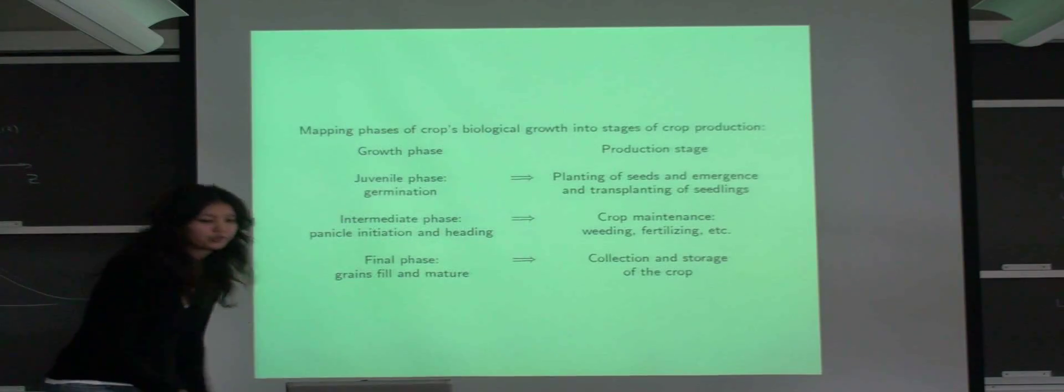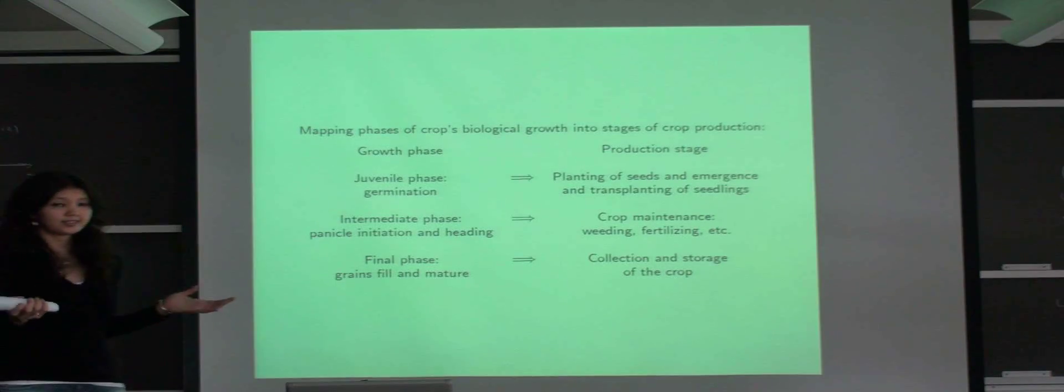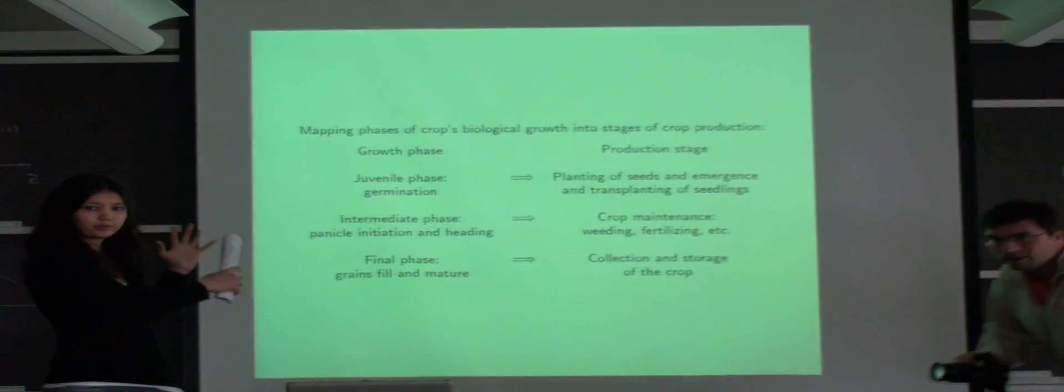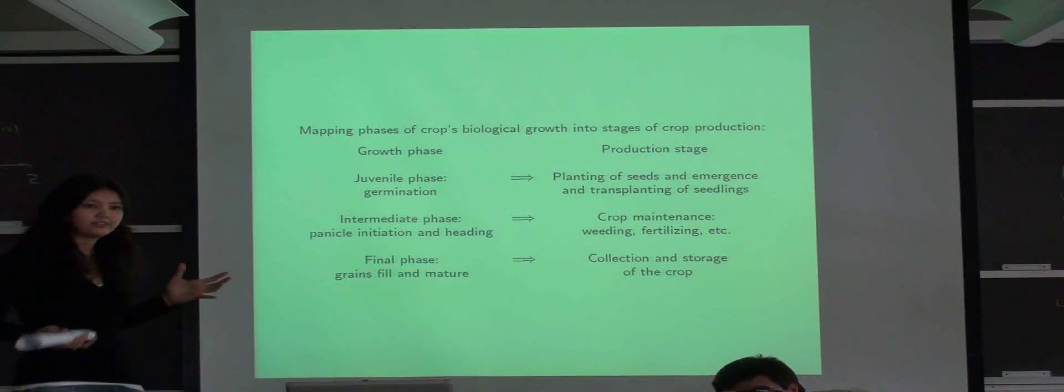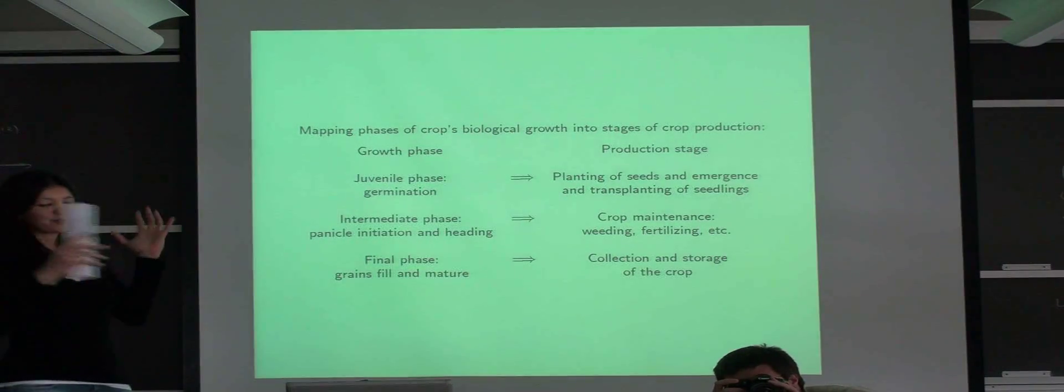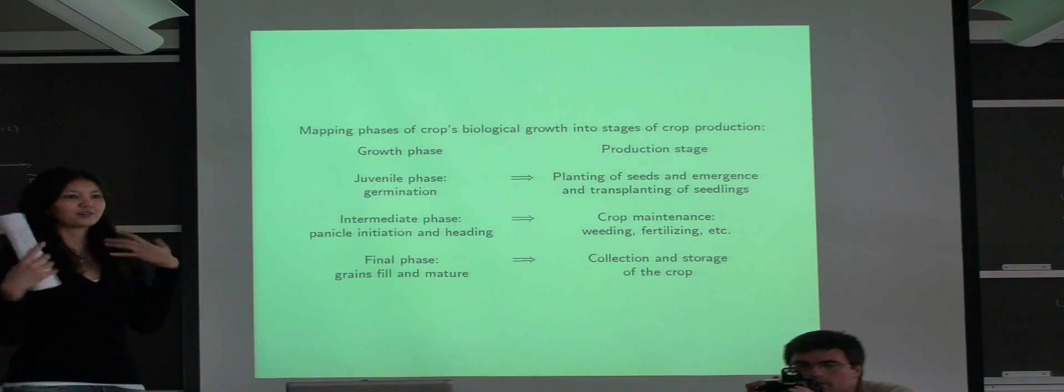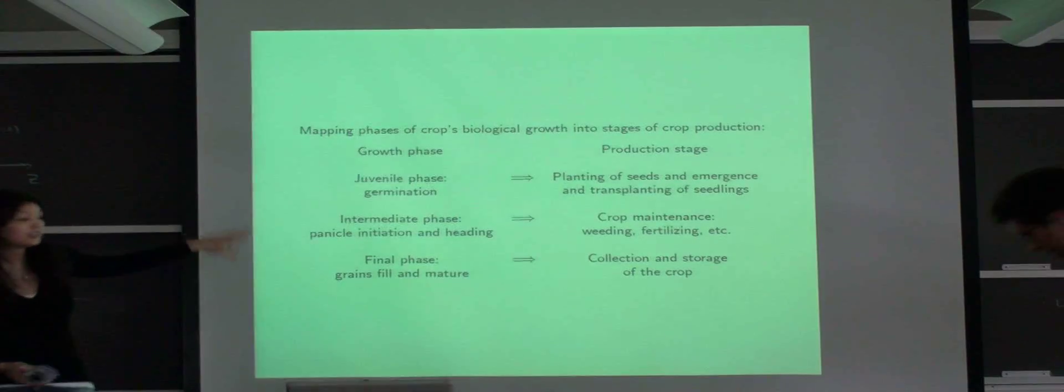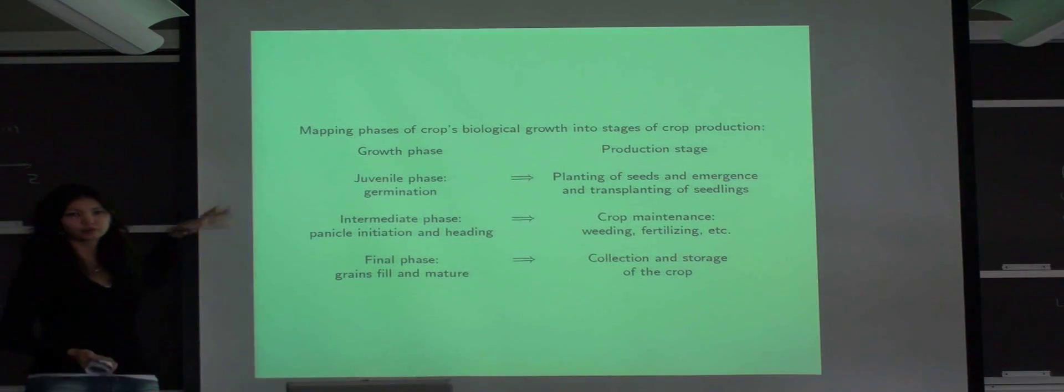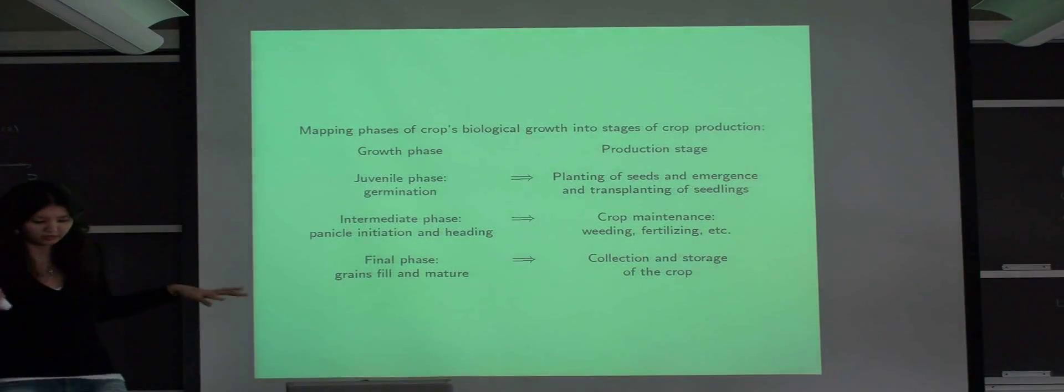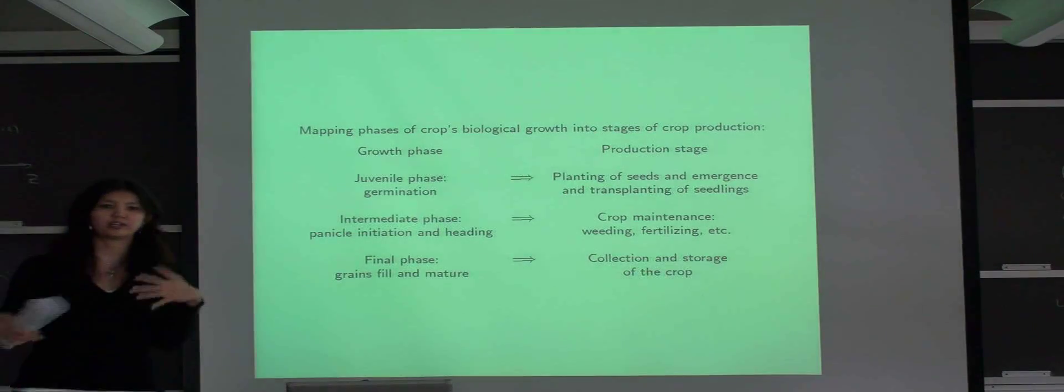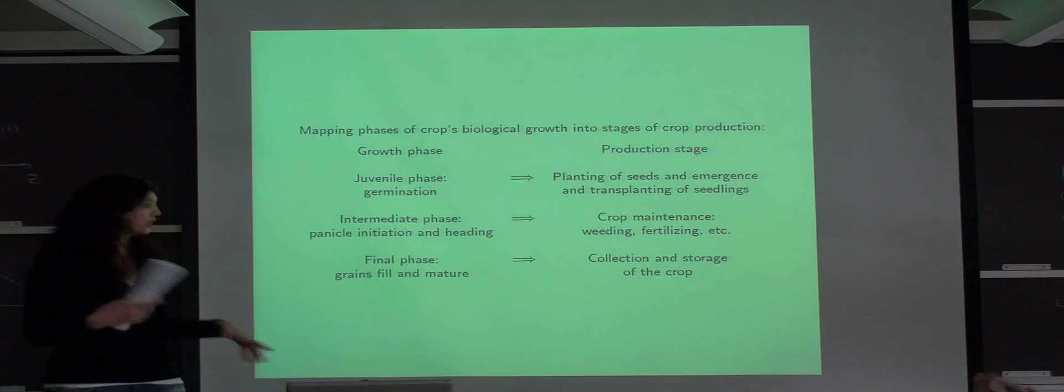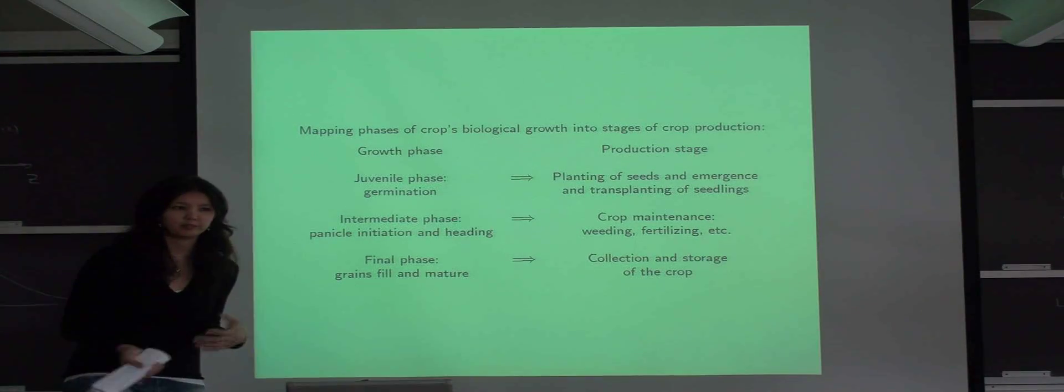To construct a multi-stage production function for rice growth, we need to map gross phases of rice plant's biological development into production stages and the corresponding operations that the farmer performs. So we identify three stages, three growth phases, which are roughly planting, plant growth, and harvesting. And as you can see within each stage, several operations are performed by a farmer simultaneously.